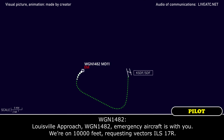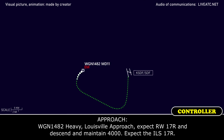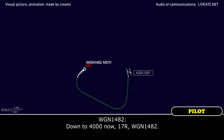Requesting vectors for ILS runway 1-7 right. Western global 1482 heavy, a little pressure on the way, ILS 1-7 right. Descend and maintain 4,000, expect ILS 1-7 right. Down to 4,000, 1-7 right, western global 1482.